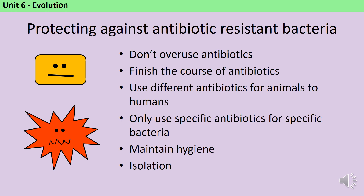The second important step is to always finish the full course of antibiotics — if prescribed seven days, take all seven, because stopping early could leave one resistant bacterium surviving, and it only takes one. Third, use different antibiotics for animals than for humans, so that if resistance develops in animal bacteria it doesn't affect the drugs used in humans. Fourth, use narrow-range antibiotics rather than broad-range ones, targeting a specific bacterium with a specific drug. Good personal and hospital hygiene also helps. Finally, when someone has antibiotic-resistant bacteria, isolate them to prevent spreading the disease to other patients.